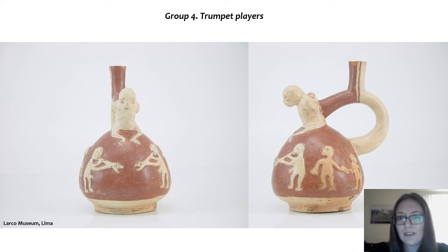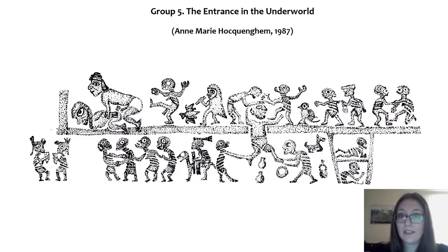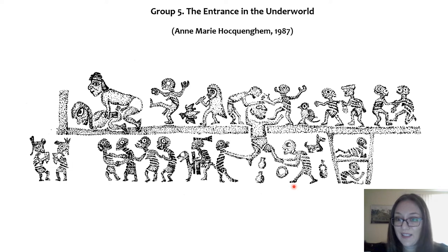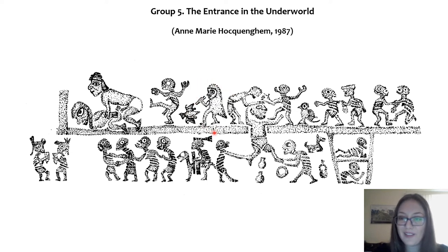The fourth group is composed of trumpet players. It's a small group, but I found it and decided to include it. Marie Hockingen named it 'the entrance in the underworld,' because the image is centered on this individual passing from one place to the other — the scene is divided in two parts, upper and below. Some skeletons are helping him, and there are musicians and dancers in the scene. We have two pan pipe players in one part of the scene, and one character playing the kena, which is a tubular flute not seen before in the other underworld dances.